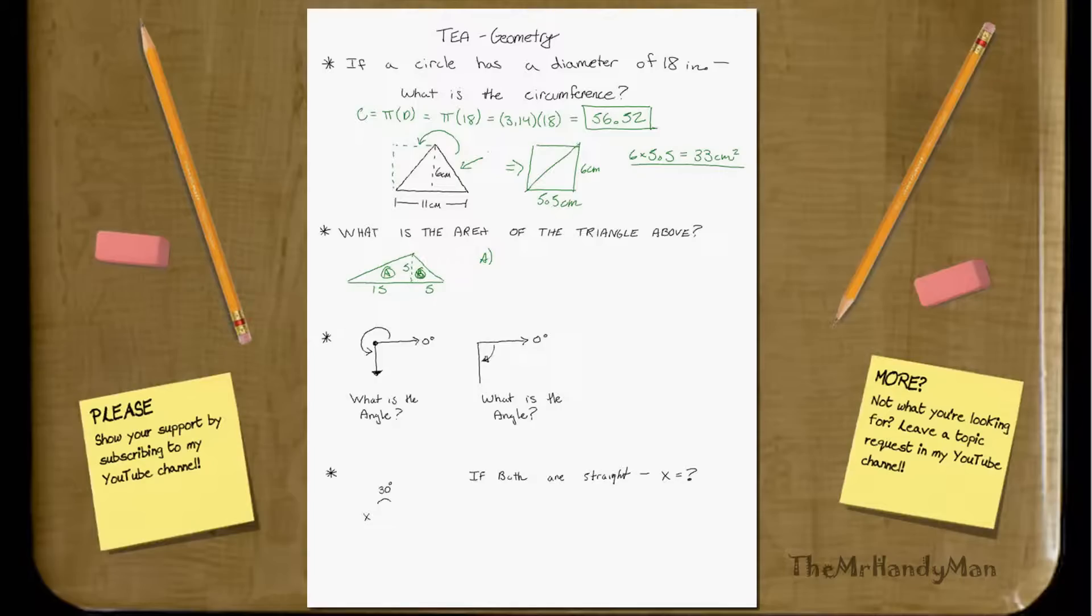So for area A, you get 5 times 15 times 1 half, because 5 times 15 would be this whole square, but that's not what we're doing. We're doing half of it, the triangle. So just multiply it by half. 5 times 15, and then you multiply it by half. That will equal 37 and a half.